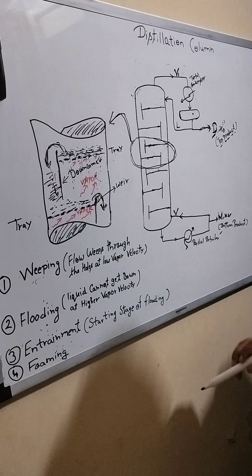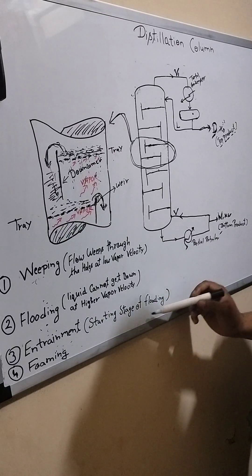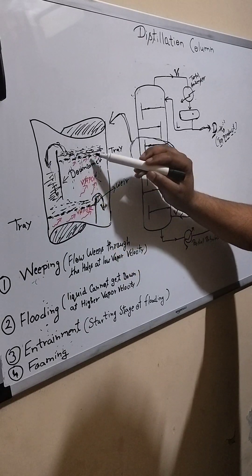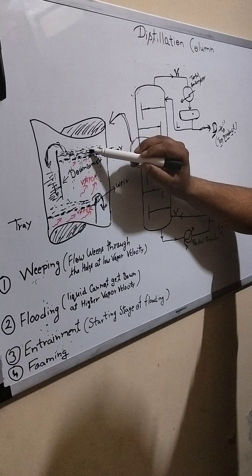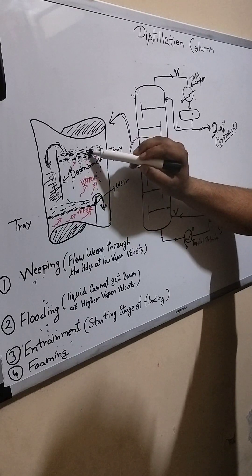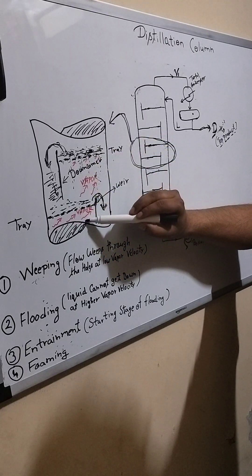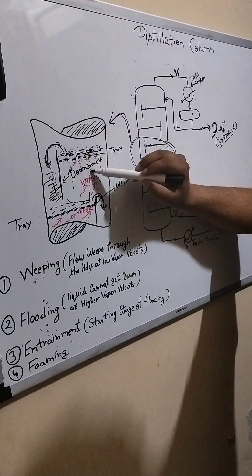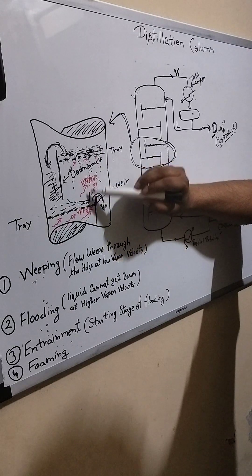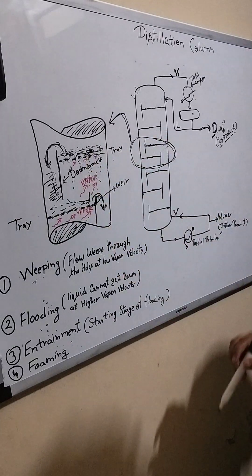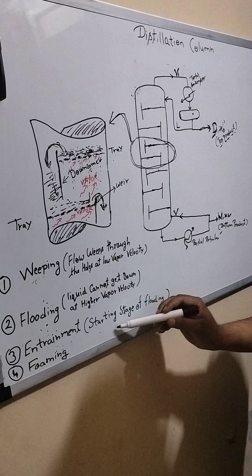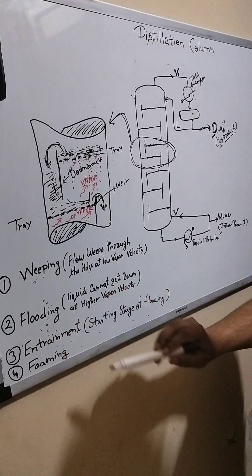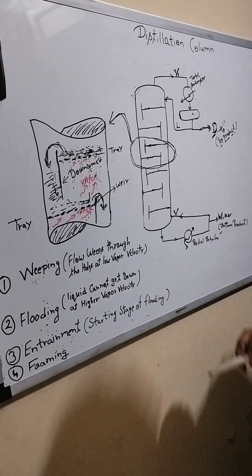And what is entrainment? It is, you can say, the starting stage of flooding. In which what happens? Suppose vapor velocity is enough high so that it can move your liquid to another plate. Suppose this vapor is coming to this plate and it moves, and it also takes away this liquid to the second plate. So you can say it is a starting stage of flooding.